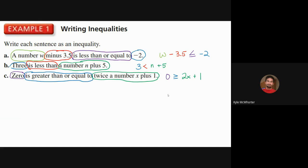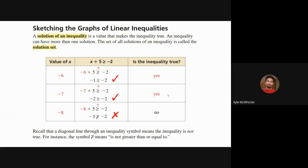Next, let's talk about what it means for a number to be a solution of an inequality. With equations, there was one solution, no solution, or infinitely many. Inequalities always have big sets of solutions — for example, every number less than 5 is a solution to x < 5. A solution is any value that makes the inequality true. The set of all solutions is called the solution set, and most of the time inequalities have infinitely many solutions.